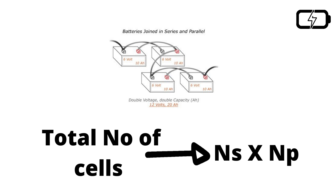So to summarize: if you want to add voltage, connect cells in series; if you want to add current capacity, connect cells in parallel. The overall pack is defined by the number of series cells and number of parallel cells. The total number of cells is the product of cells in series and cells in parallel. This is how you design the battery storage system for the required voltage and ampere-hour rating.